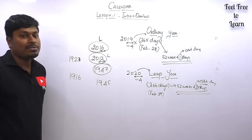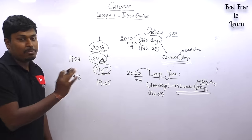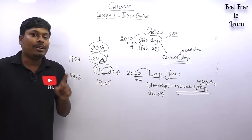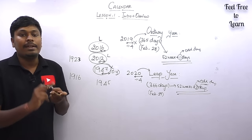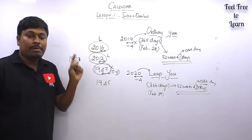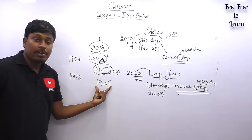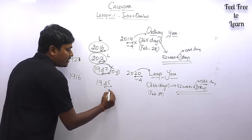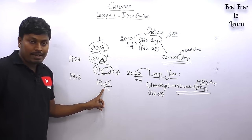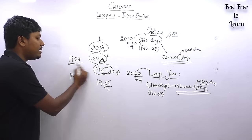For 1947: last two digits are 47, not divisible by 4 — it's an ordinary year. So 1947 has 52 weeks plus 1 odd day, and February 1947 has only 28 days. For 1945: last two digits are 45, not divisible by 4 — it's an ordinary year with 1 odd day.